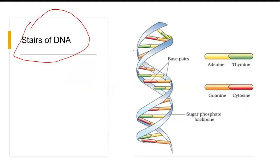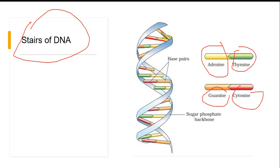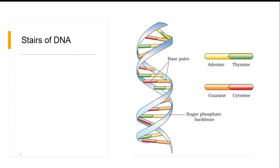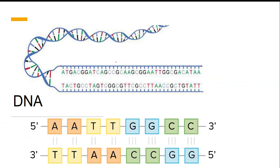The stairs of the DNA are made up of nitrogen bases. There are four types of nitrogen bases: adenine, thymine, guanine, and cytosine. These are the base pairs. Whatever is shown in blue is made up of phosphorus and ribose sugar. So DNA is made up of the sequence A, T, G, C — adenine, thymine, guanine, and cytosine.